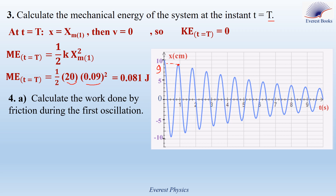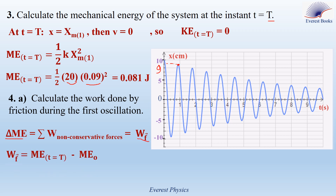Question number four: calculate the work done by friction during the first oscillation. The variation in mechanical energy equals the sum of works done by non-conservative forces, which here is only friction. So ΔME equals work done by friction. ΔME equals ME_final minus ME_initial = 0.081 − 0.1 = −0.019 joules. The work done by friction is −0.019 joules, which is negative as expected.